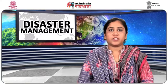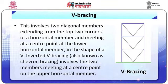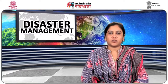However, cross bracing provides the least available space within the façade for openings and results in the greatest bending in floor beams. K bracing: braces connect to the column at mid-height, providing more flexibility for openings and resulting in the least bending in floor beams. K bracing is generally discouraged in seismic regions because of the potential for column failure if the compression brace buckles. V bracing involves two diagonal members extending from the top two corners of a horizontal member and meeting at a center point at the lower horizontal member in the shape of a V. Inverted V bracing, also known as chevron bracing, involves two members meeting at the center point on the upper horizontal member. Both configurations mean that the buckling capacity of the compression brace is likely to be less than the tension yield capacity of the tension brace, so when braces reach their resistance capacity the load must be resisted in bending of the horizontal member.